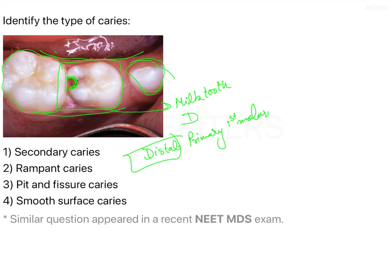You can see there is a carious lesion on the proximal surface. Now, what are the options? One option is secondary caries, which are generally seen below restorations — if you have already restored the tooth. Since there is no restoration here, we can rule out secondary caries.